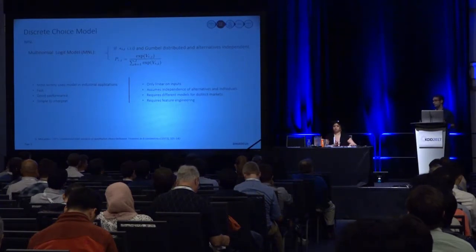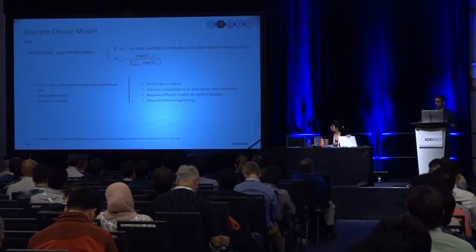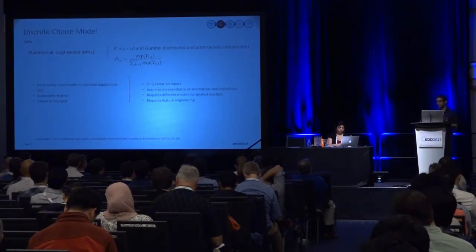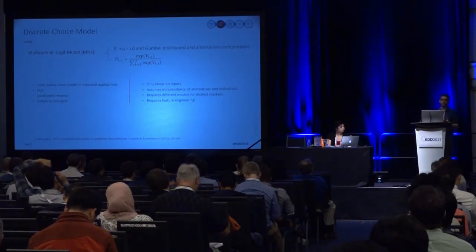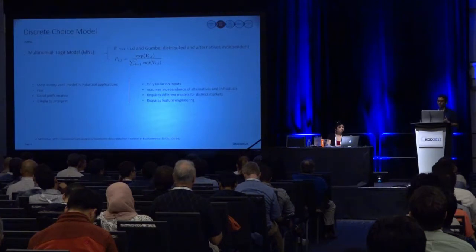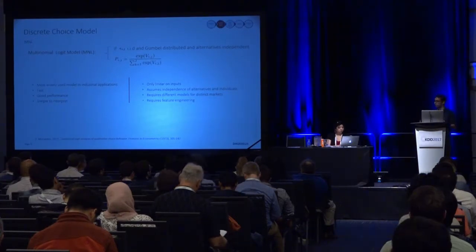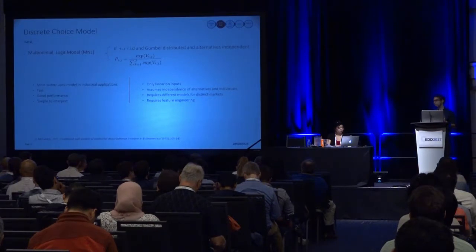MNL has some disadvantages. Because it's linear, the accuracy suffers compared with other methods. It also has assumptions — specifically the independence of alternatives and of individuals. In practice, for it to work well, we usually require different models for different markets, such as different origin-destination pairs or different groups of users like business or leisure travelers. It also sometimes requires manual feature engineering.